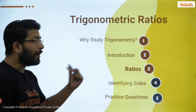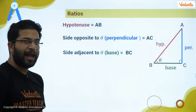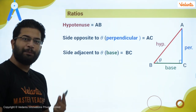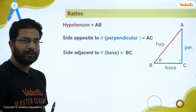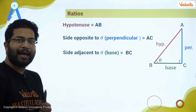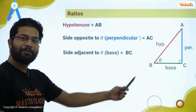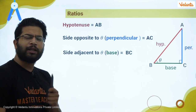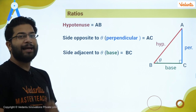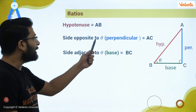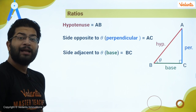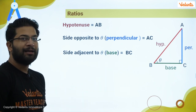In a right angle triangle there are three sides: base, perpendicular, and hypotenuse. The hypotenuse is the side opposite the 90-degree angle. Perpendicular and base are not fixed — they depend on which angle we are referencing. For angle theta, the side opposite to theta is the perpendicular and the side adjacent to theta is the base.